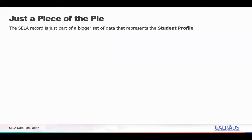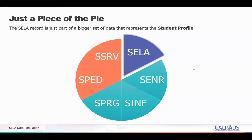The student CELA record is just part of a bigger set of data that represents a student profile. A student profile may comprise of four or six files depending on the student status. The student is expected to have the student enrollment record submitted through the SENR file, the student demographic record as well as address submitted through the SINF file, and if a student is eligible or participating in any program, an SPRG record should also be submitted. And of course, we have our CELA record to reflect the student's ELAS status.